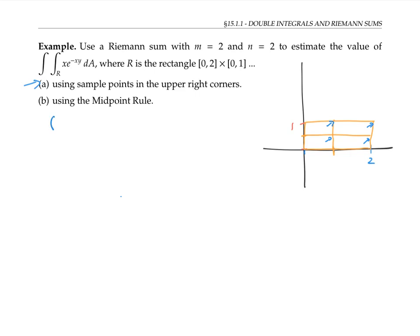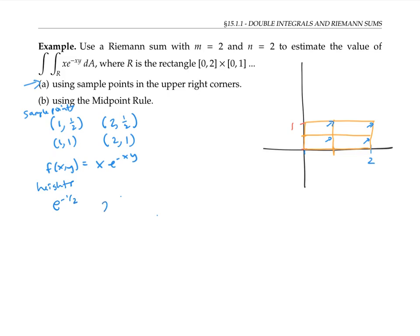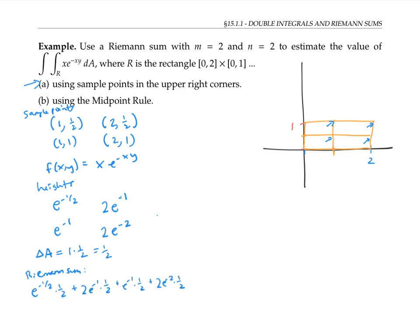Those sample points have coordinates (1, 1/2), (2, 1/2), (1, 1), and (2, 1). We get the corresponding heights by plugging those sample points into the function. The corresponding heights are e to the minus one-half, two e to the minus one, e to the minus one, and two e to the minus two. Since the area of our sub-rectangles delta A is one times one-half — base times height — so delta A equals one-half, we compute the Riemann sum by adding up the product of heights times delta A. Factoring out the one-half, this adds up to a decimal approximation of about 0.99.